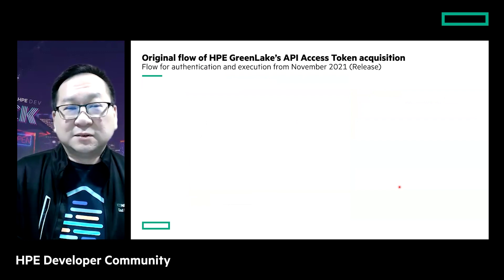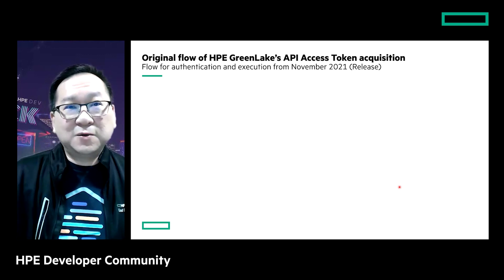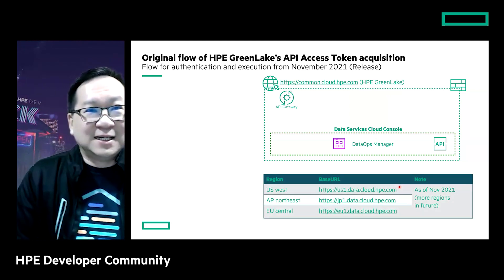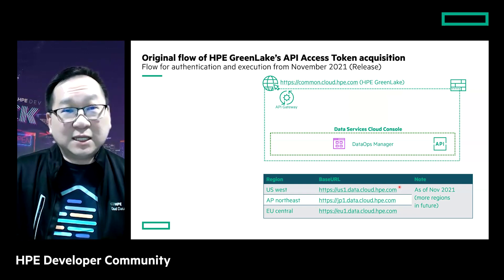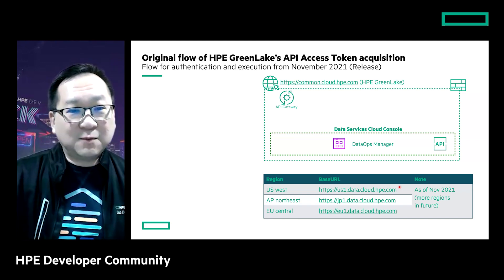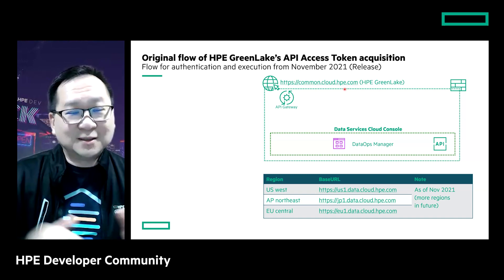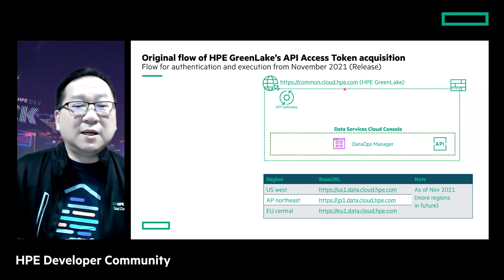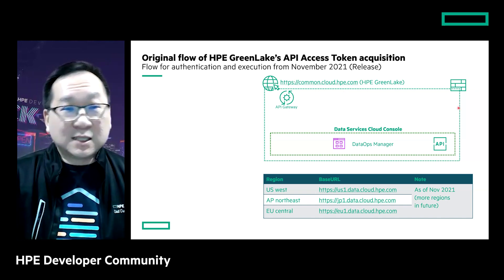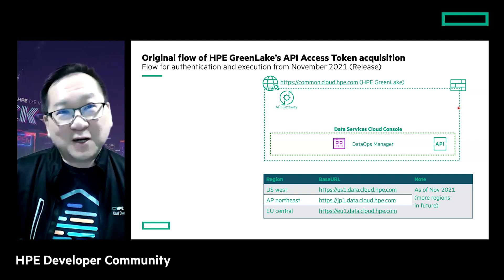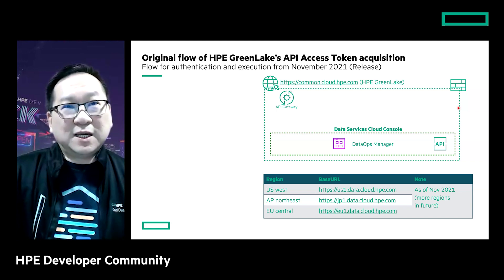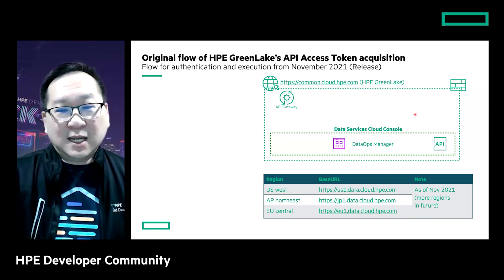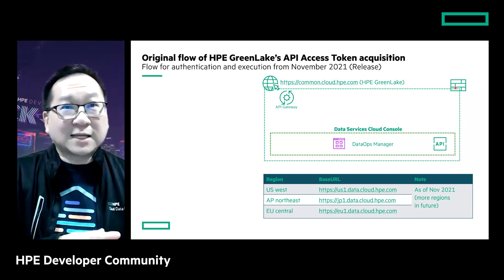Regarding authentication flow: back in 2021, the HPE GreenLake was accessible through the original gateway at common.cloud.hp.com. It's a cloud-based application hosted in the cloud where users log in through the website. Inside there, users access all those applications and services. Originally, there was only one service — DataOps Manager — sitting on its own page called the Data Service Cloud Console.